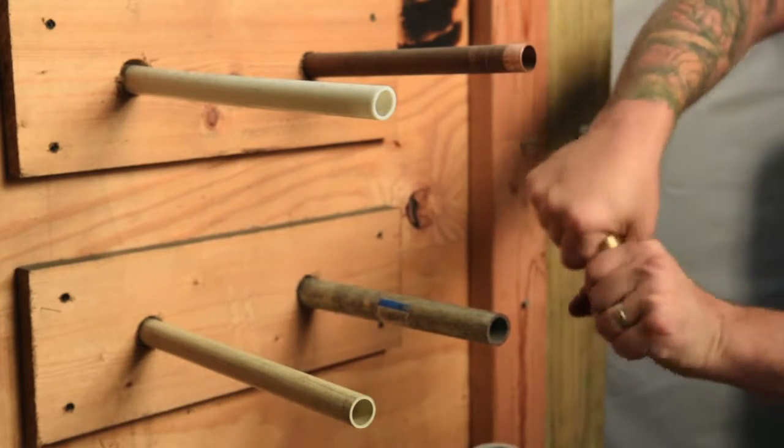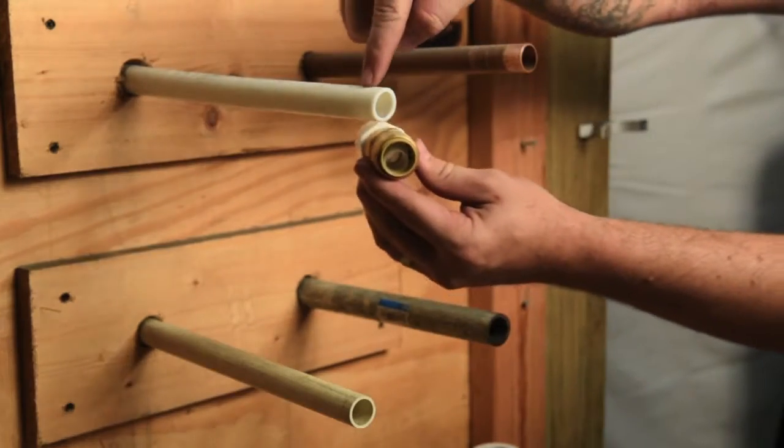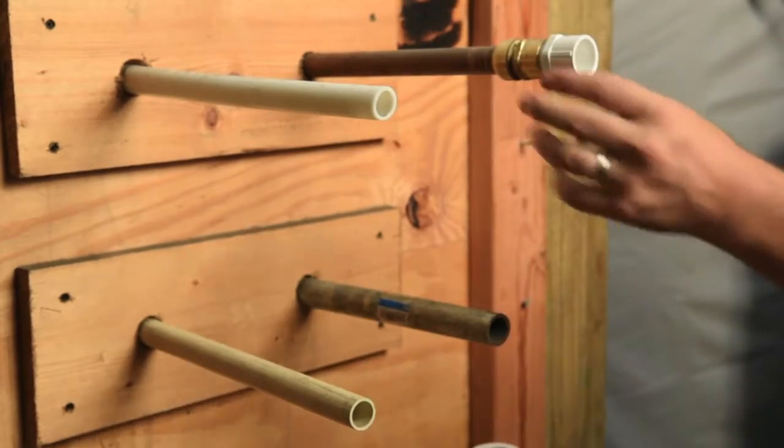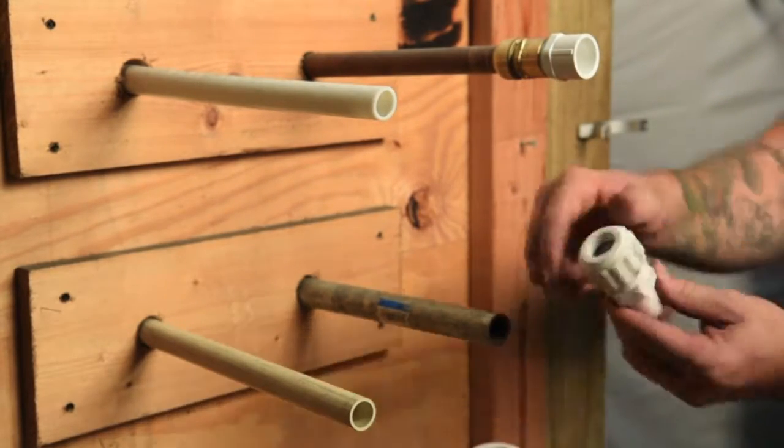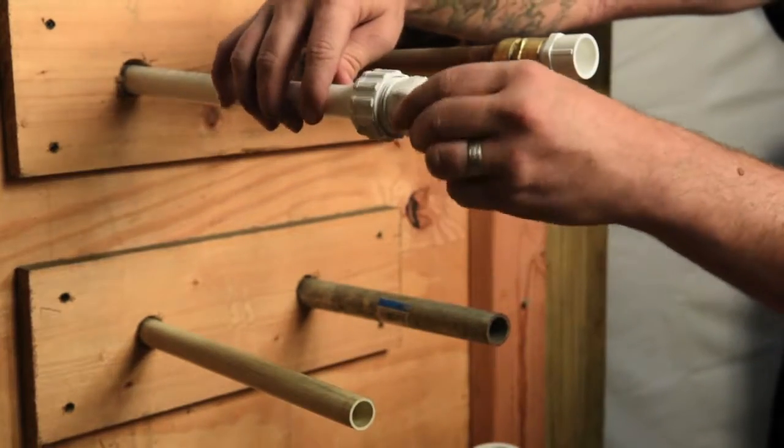This shark bite adapter can be used on either the copper, the pex, or even the cPVC. It's most commonly used with the copper and the pex. The compression fitting is applied to the pex exactly the same way as it is to the copper.